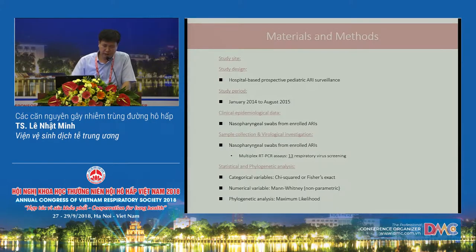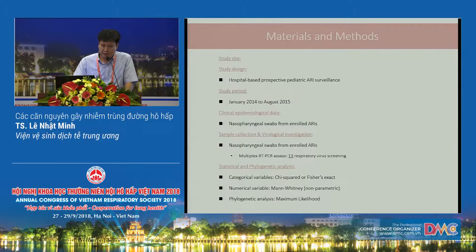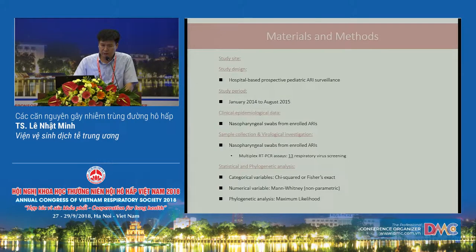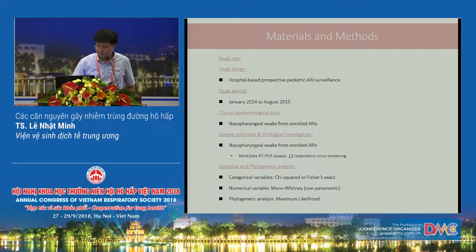We had four sets. In the first set, we detected influenza A and B, RSV, and human metapneumovirus. In the second, we detected parainfluenza. In the third, we detected rhinovirus, coronavirus, and enterovirus. In the fourth, we detected adenovirus and bocavirus.